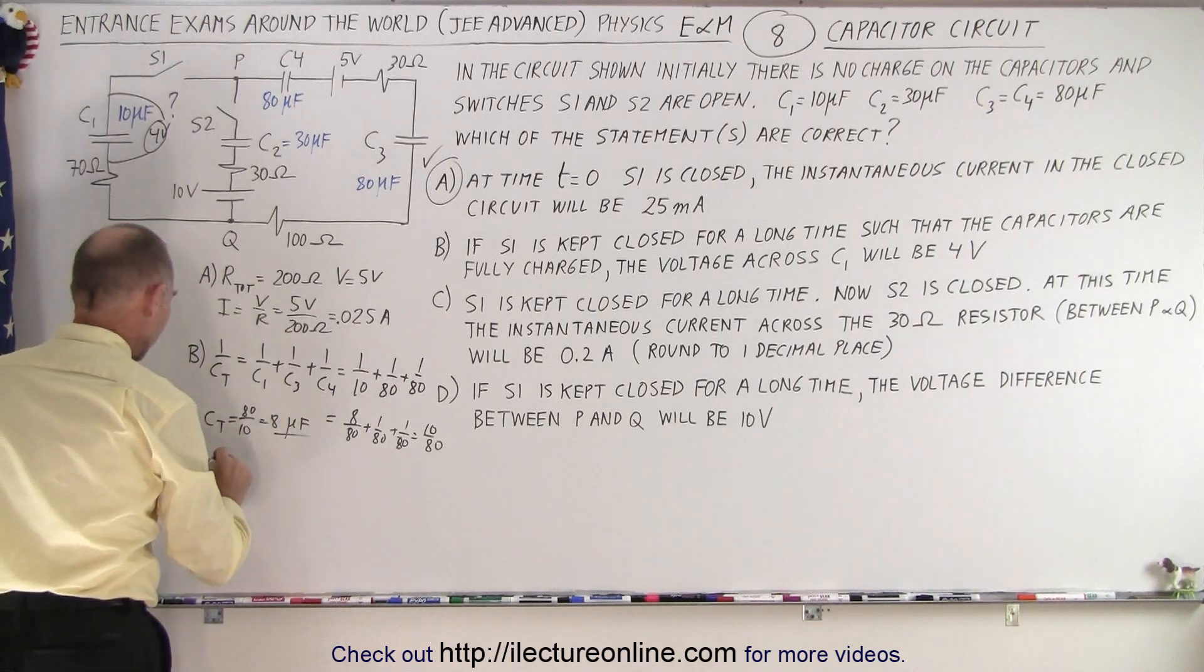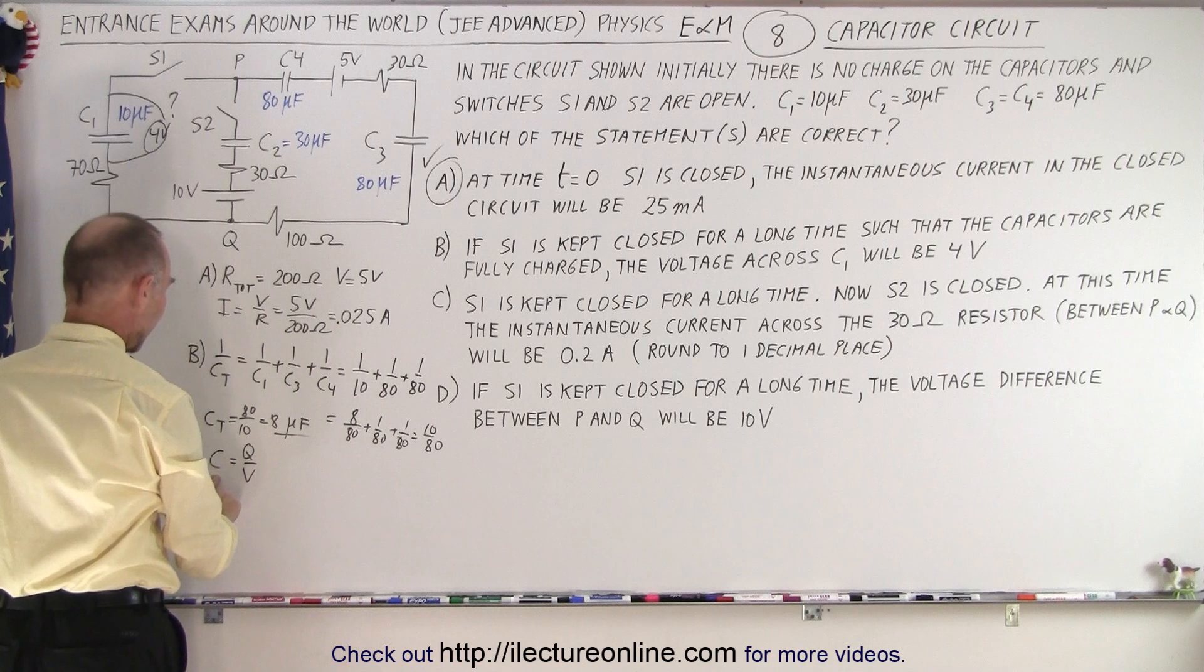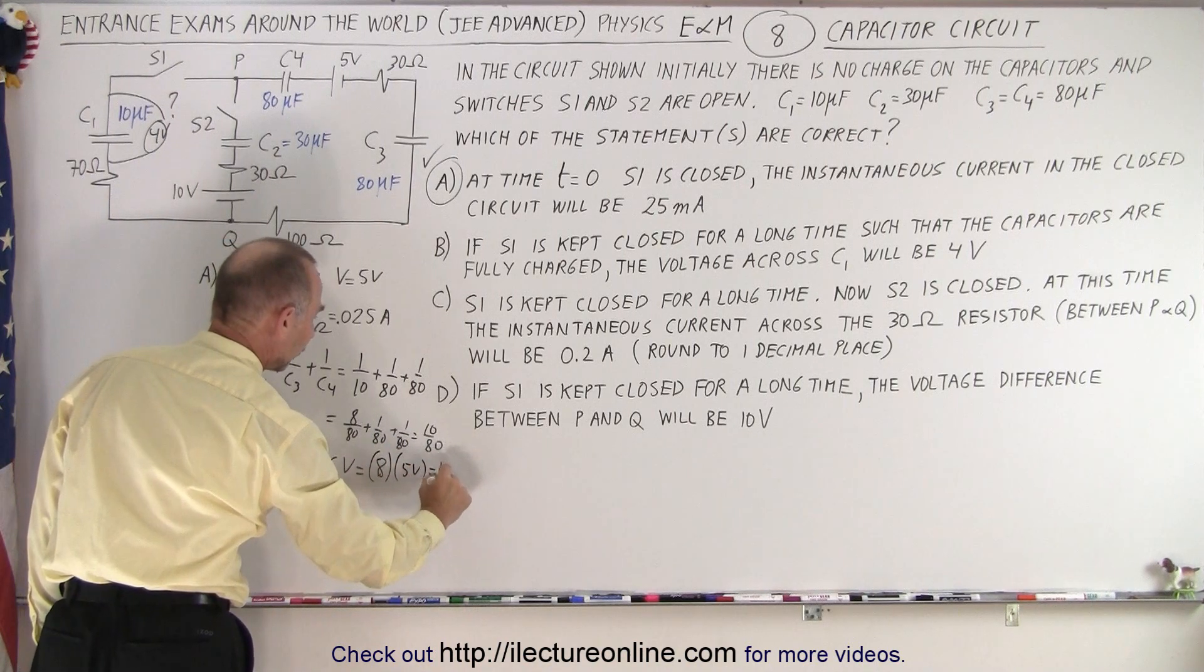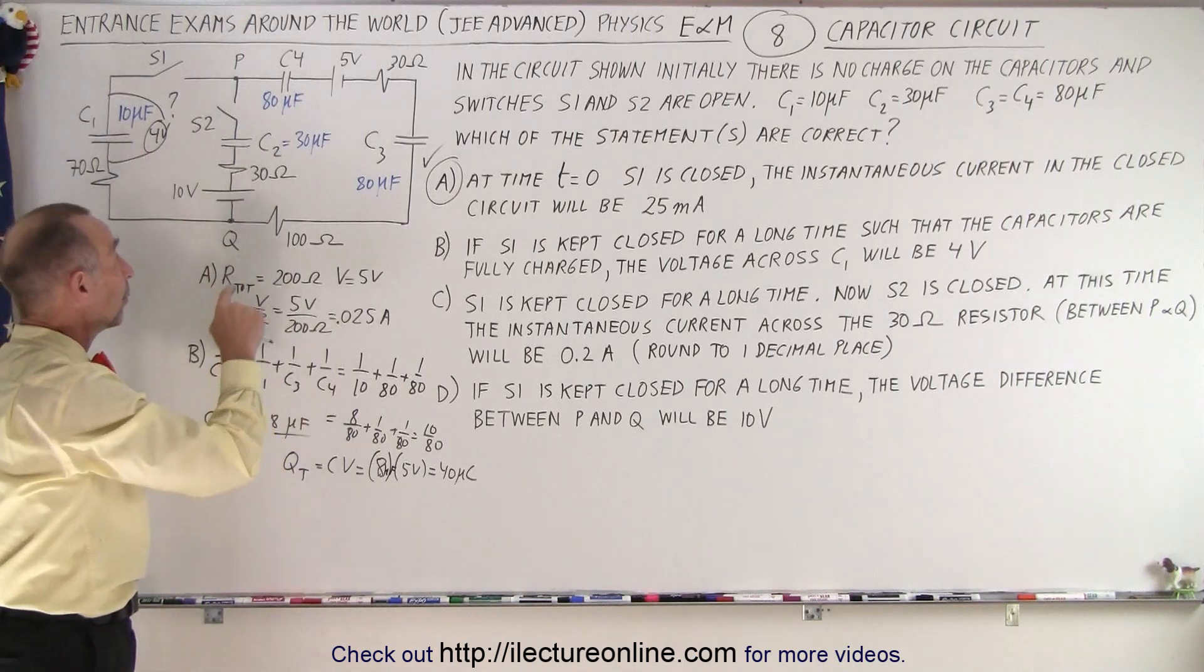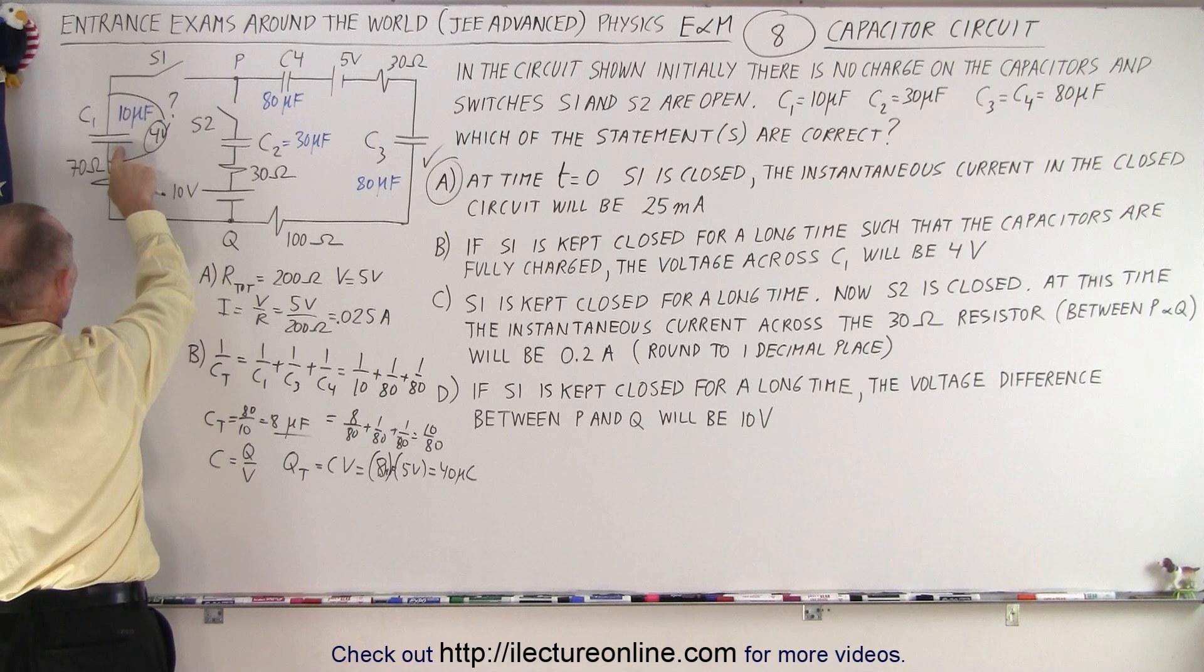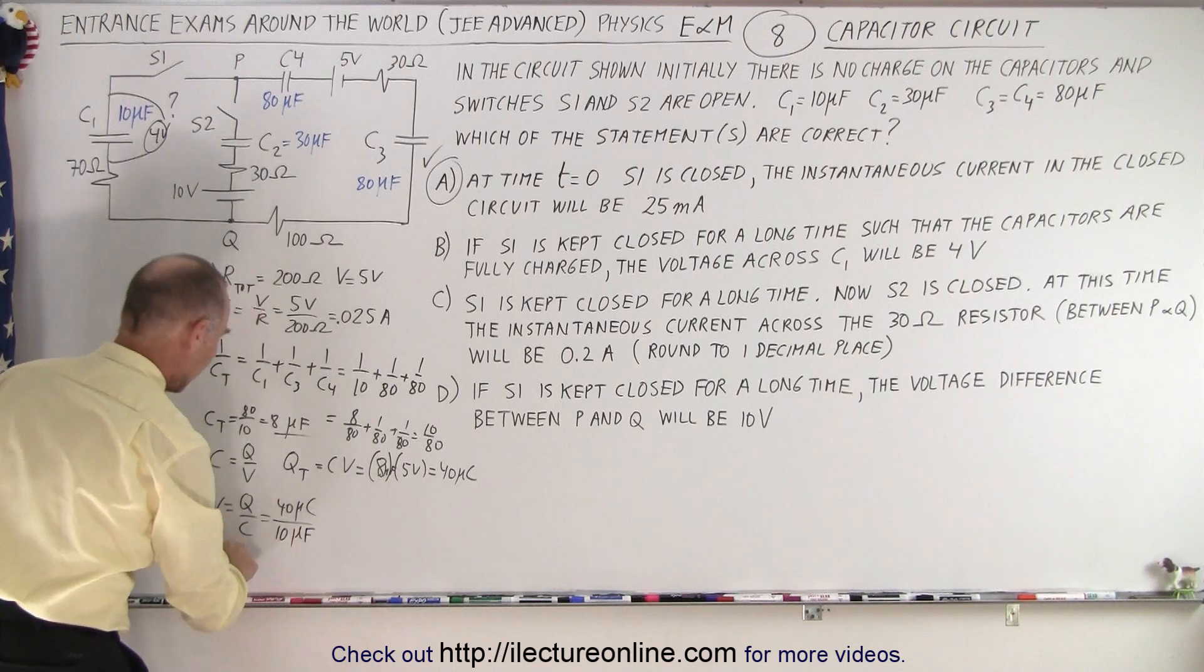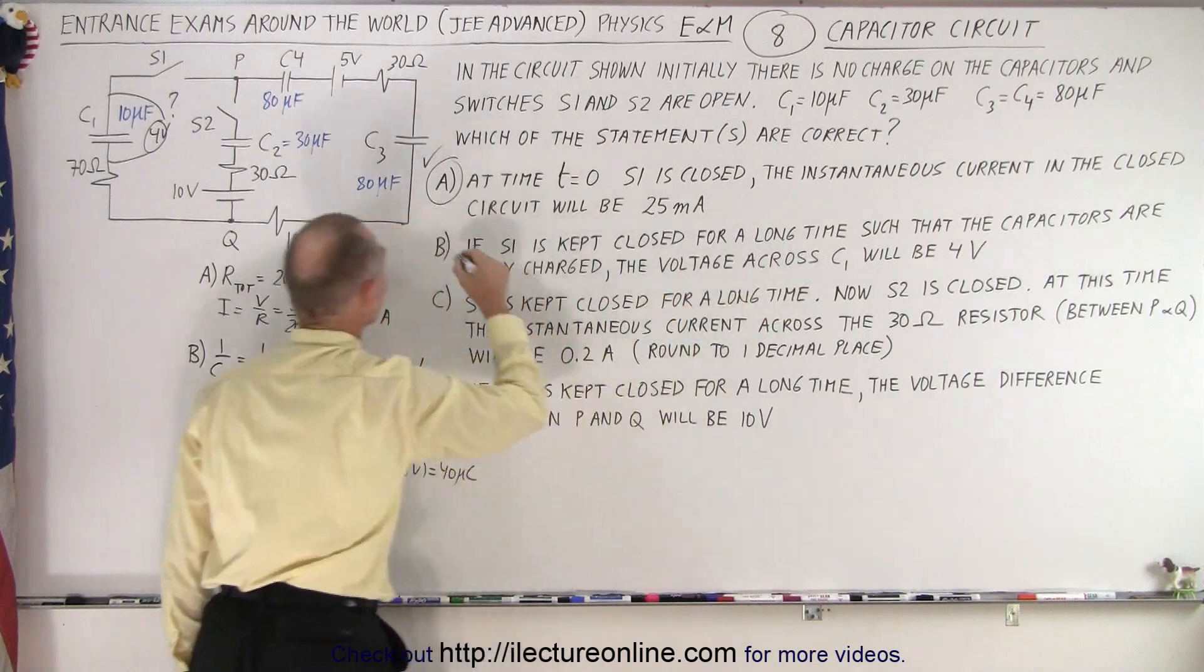Now we know that capacitance equals charge over voltage. How much voltage is applied to the circuit? It's 5 volts. We know the capacitance, so the total charge Q total is equal to C times V, which is 8 microfarads times 5 volts, which equals 40 microcoulombs of charge. We know the total charge, and remember that the charge in capacitors in series is the same on every capacitor, which means there is 40 microcoulombs of charge on C1. So now V equals Q over C, that would be 40 microcoulombs divided by 10 microfarads for the capacitor, and so it would be 4 volts. And sure enough, that's what they say, so B is correct as well.